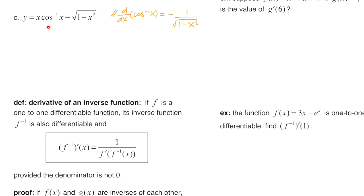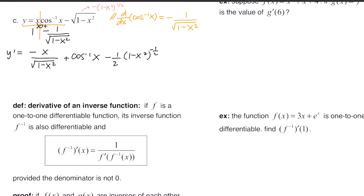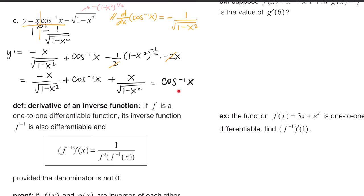This example has y equals x cosine inverse of x minus the square root of one minus x squared, rewritten as the quantity to the one half. We use the product rule on the first term, then take the derivative of the second term and apply the chain rule, multiplying by the derivative of the inside, which is negative two x. The twos cancel, the negative times negative becomes positive, and the expression moves to the denominator as a square root. The remaining terms are exact opposites and cancel, giving a final answer of cosine inverse of x.